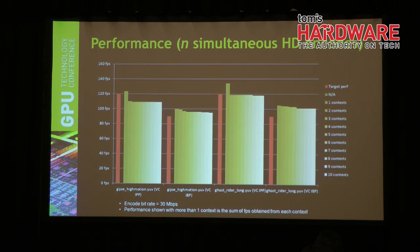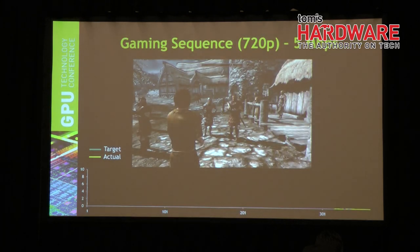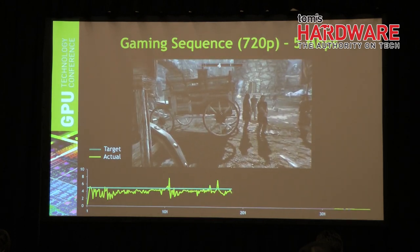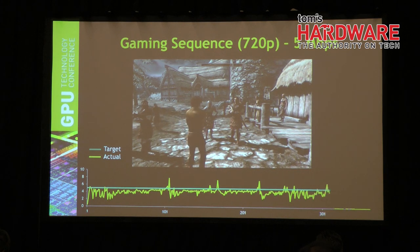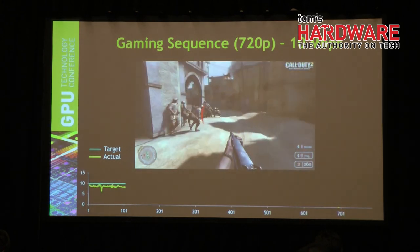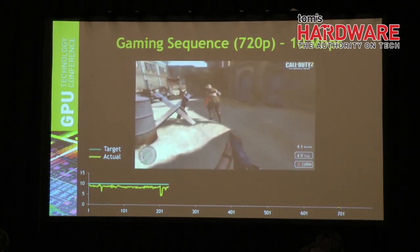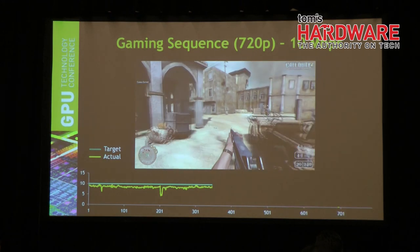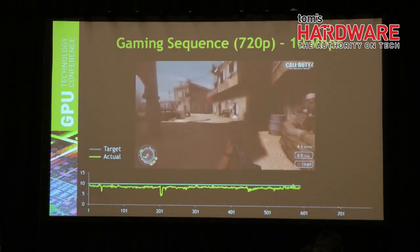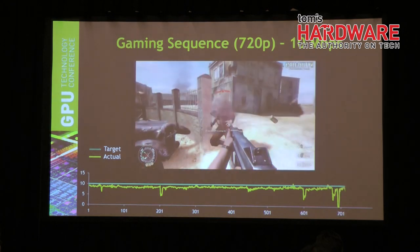A gaming sequence capture demo: encoded at 7.5 Mbps at 720p using main profile, low-latency streaming at 5 Mbps without Grid SDK settings. Another clip at 10 Mbps — Call of Duty. The bottom of the display shows the instantaneous bit rate per frame; the top line is the target (10 Mbps in this case) and the bottom is the actual bit rate.